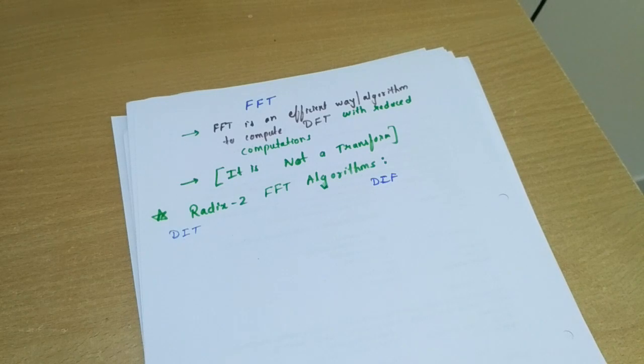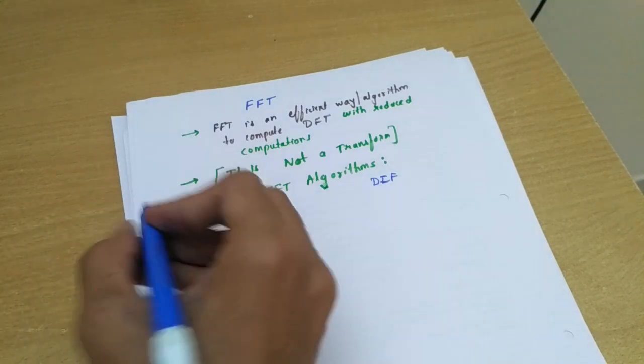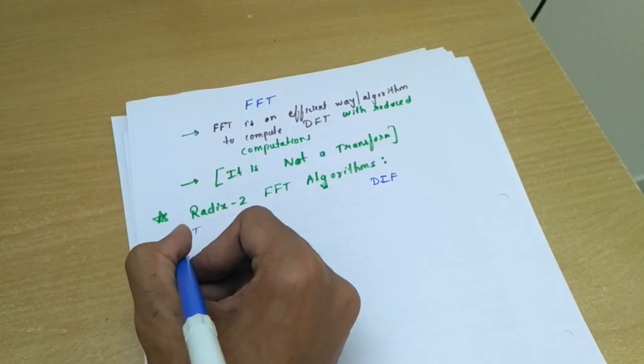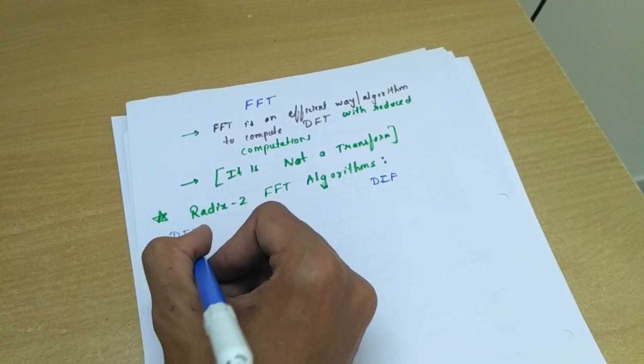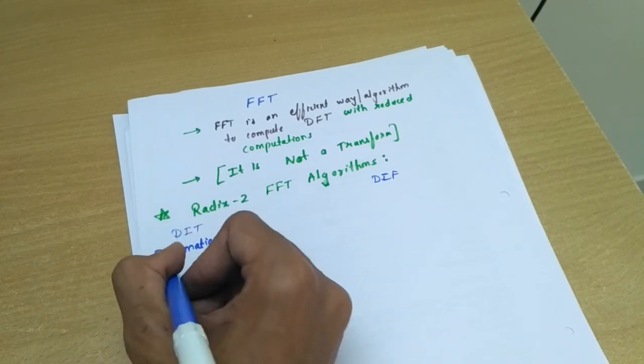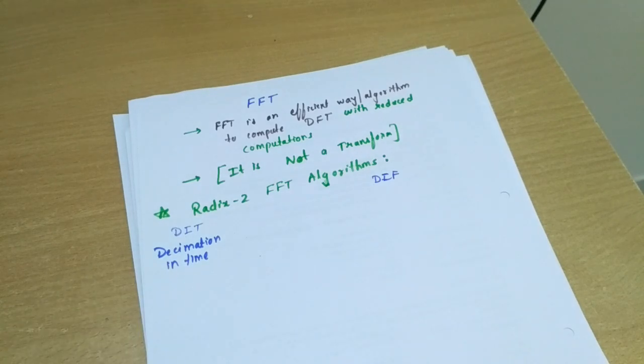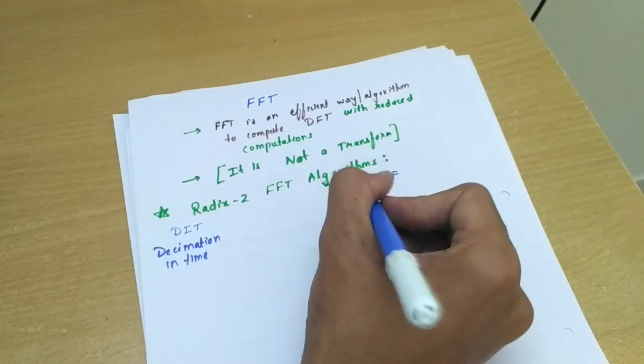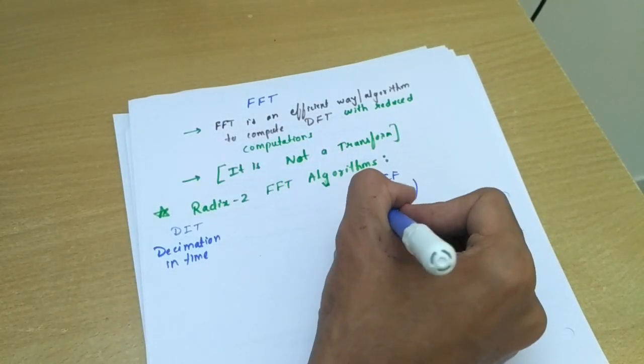DIT means decimation in time. Decimation means to divide or break, so it's decimation in time. And this DIF is nothing but decimation in frequency.